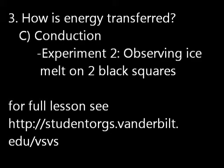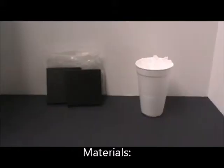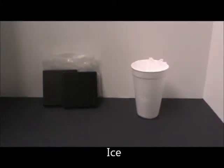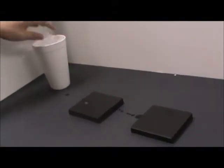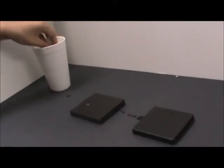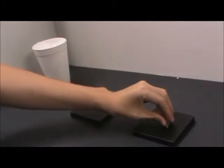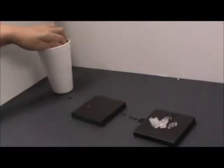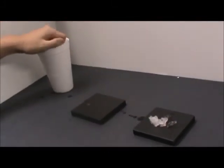Experiment 2. Observing ice melt on two black squares. For this experiment you will need a set of two black squares and ice. Place some ice in the middle of each block and tell students to watch what happens. Do not explain that the two blocks are made from two different materials.